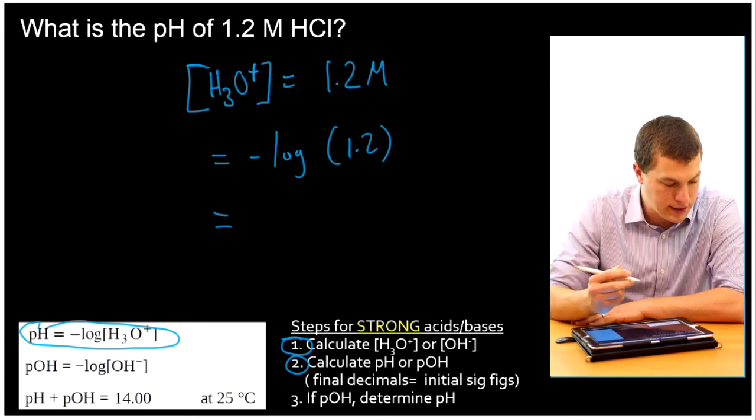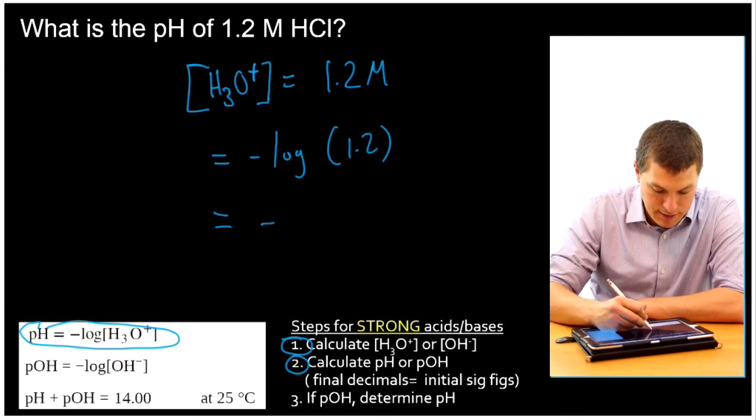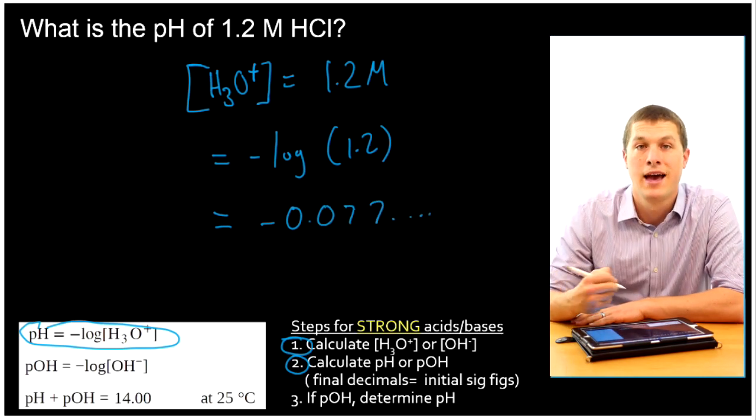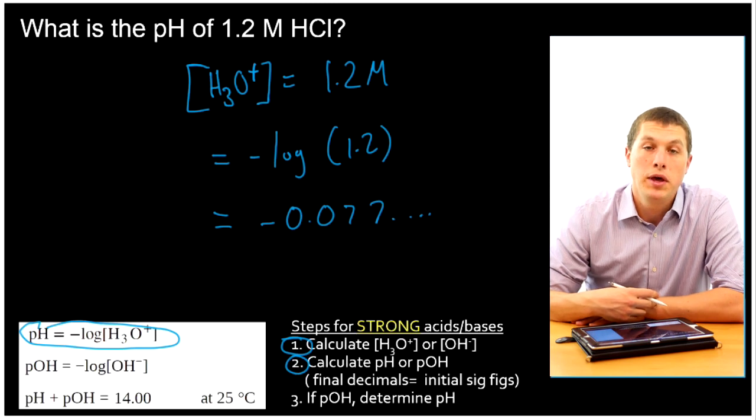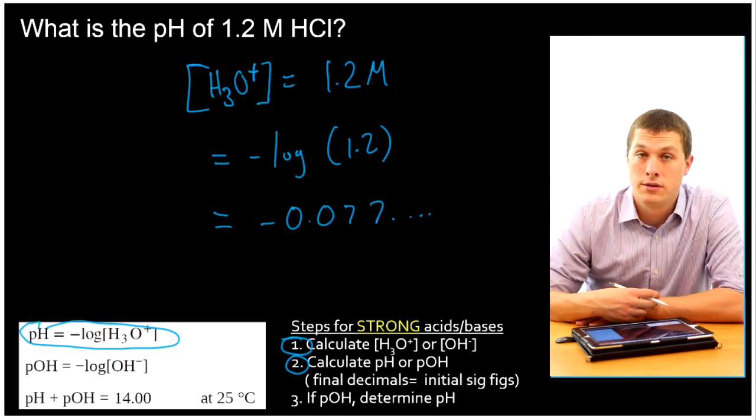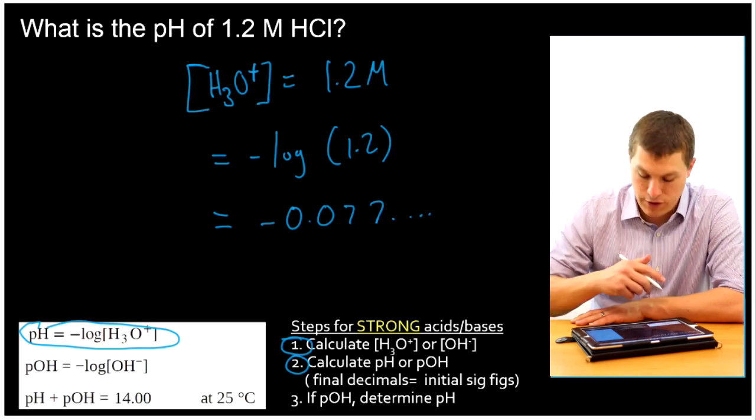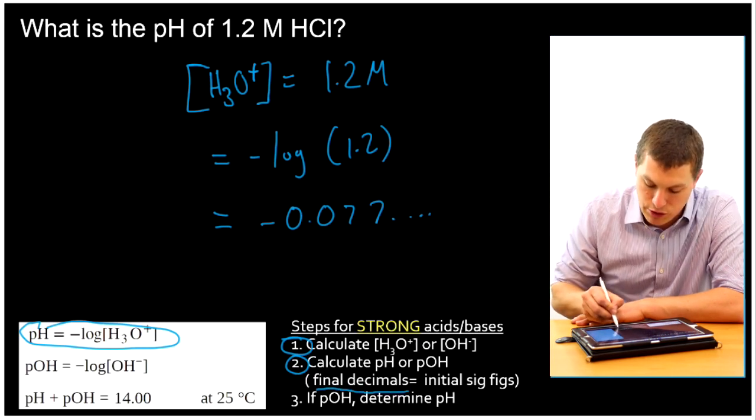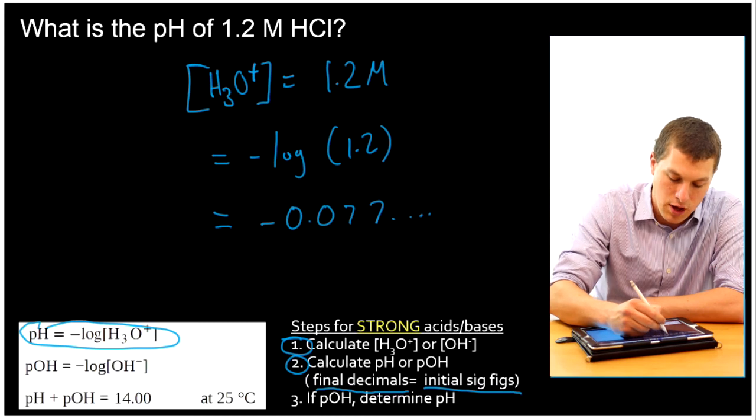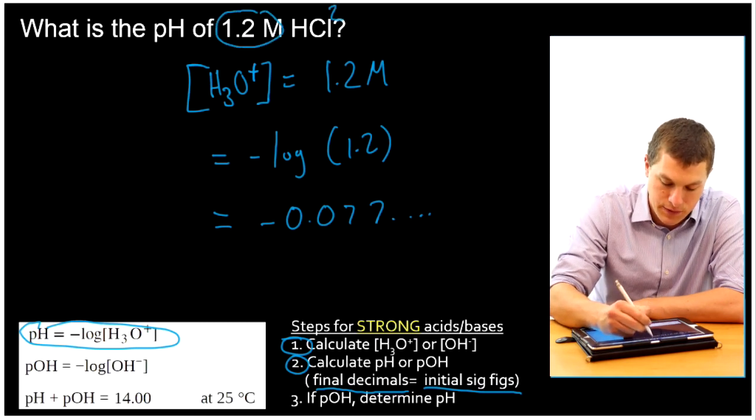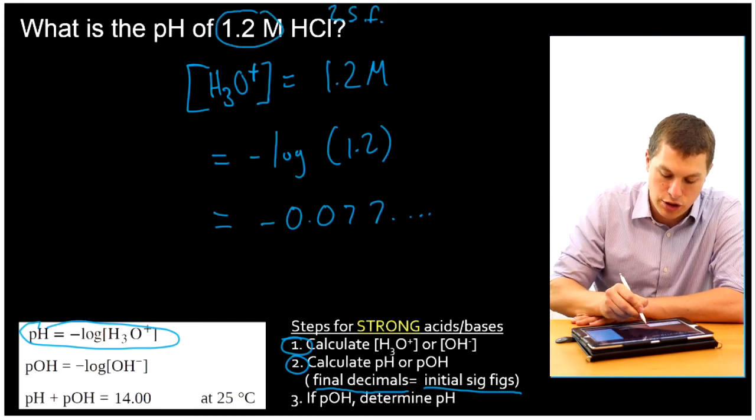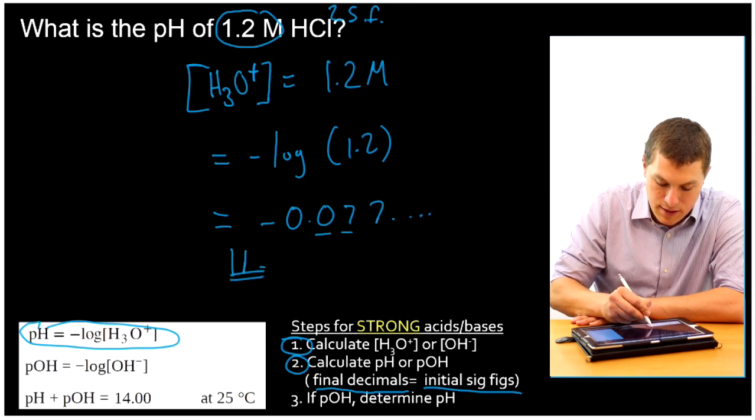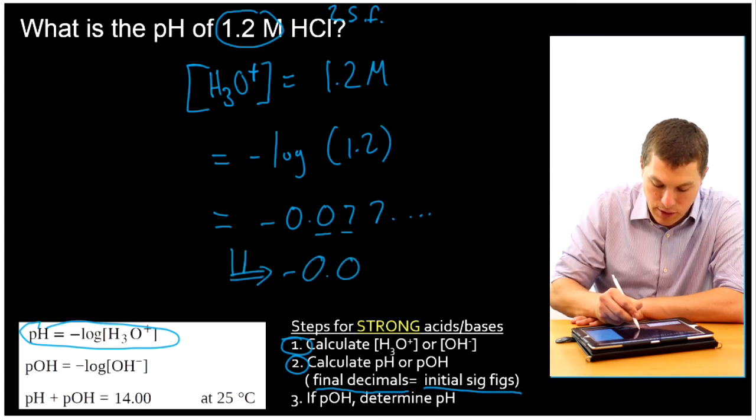And I know that's going to be equal to negative log of 1.2. When I plug that in, I'm going to get negative 0.077 dot, dot, dot, dot. So I get a bunch of digits. How many sig figs? Here, when you use the logarithms, there's a sort of unique sig fig rule. And that is that whatever the final number of decimals you have should be equal to the initial sig fig. So here I have one, two sig figs. And that means that I should end up with two decimals. One, two. So that means I'm going to round this guy to negative 0.08.